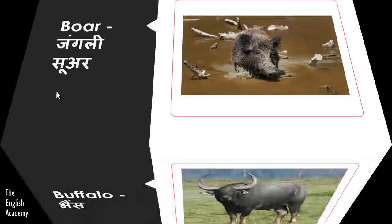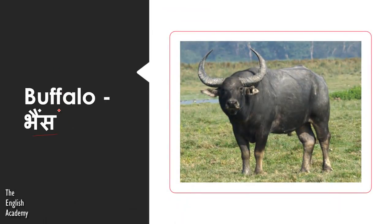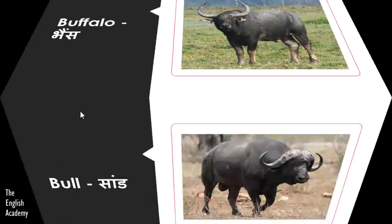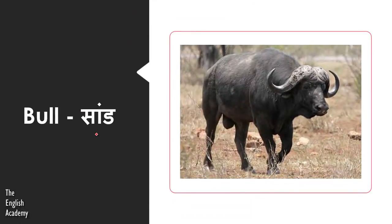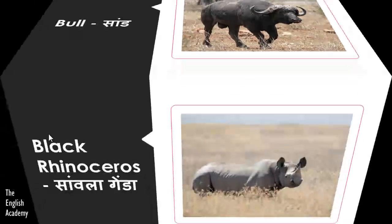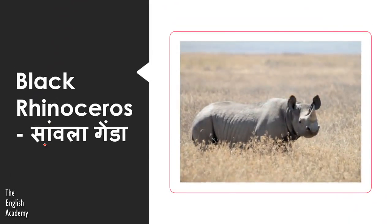The next animal is Bheins. Bheins we call Buffalo. Let us see the next animal — Sand, which we call Bull. Then we have Samvla Genda, which is called Black Rhinoceros.